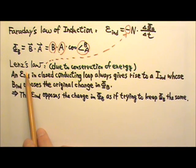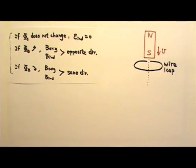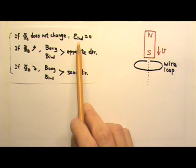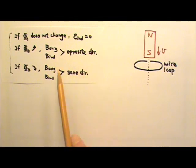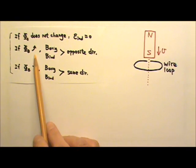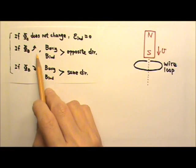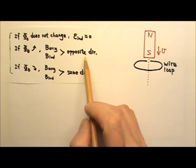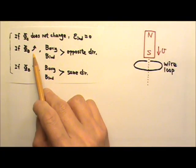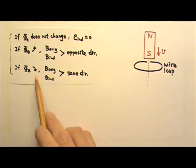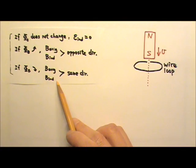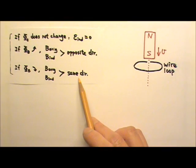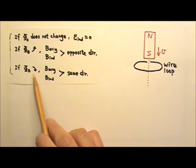We can use Lenz's Law to help us find the direction of an induced current. First, decide if the magnetic flux through a conducting loop is changing. If there is no change in flux, there is no induced EMF and no induced current. If the flux is changing, find out whether it is increasing or decreasing. If increasing, the original magnetic field and the induced current's magnetic field must be in opposite directions, to cancel the increase. If decreasing, they must be in the same direction, to compensate for the loss in flux.